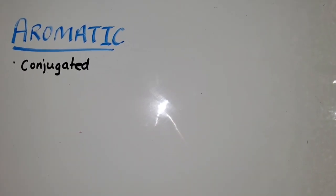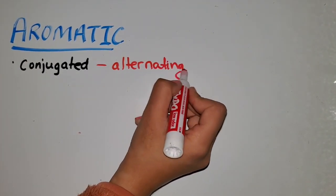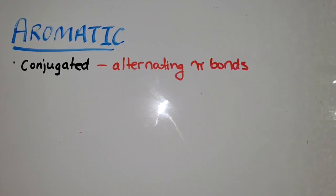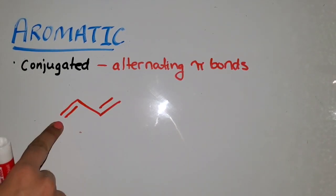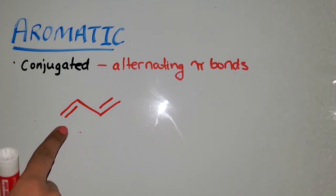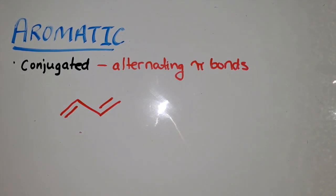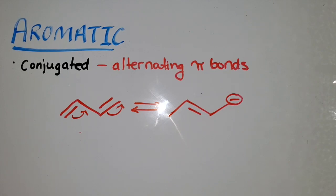The third condition is that the molecule has to be conjugated. The way I like to think about it is to look for alternating pi bonds — double bond, single bond, double bond. This has conjugation because it has resonance, and that allows for increased stability. So you're looking for alternating pi bonds that allow for resonance for increased stability for your molecule.